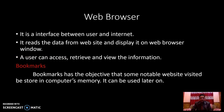A web browser is an interface between the user and the internet. It provides the functionality to open a web page and retrieve information from the internet — it is the middleman between the user and the internet. It reads data from the website and displays it on the web browser window. A user can access, retrieve, or view any type of information. Bookmarks are an important part of the internet — they allow you to store notable websites you have visited in your computer memory so you can access the same website later when required.